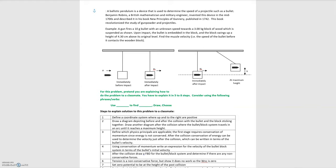In this video we'll be going over the ballistic pendulum example. The gist of a ballistic pendulum is that you fire a bullet into some object. That object is able to swing freely, the bullet embeds itself in the object, and the object and the bullet swing up until they reach a maximum height, which you then record.